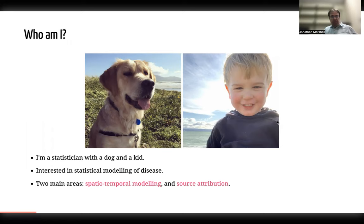So who am I? I'm Jonathan Marshall, Associate Professor of Statistics. I have a dog and a child. This is Samuel, and this is Minnie, a golden retriever. Samuel is now five and a half, so he's at school — a bit older than that photo looks.